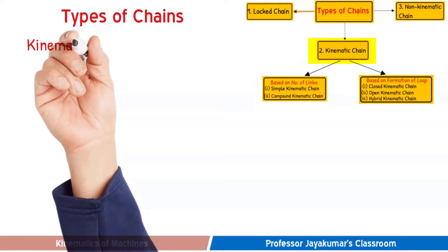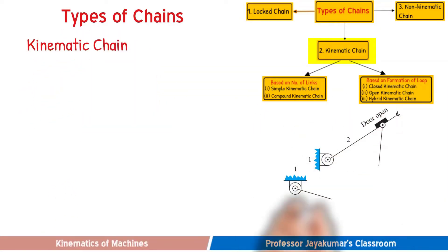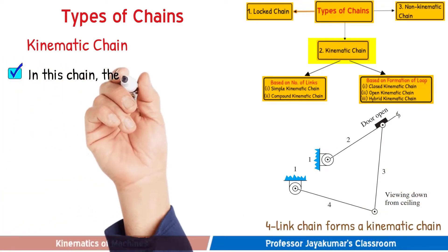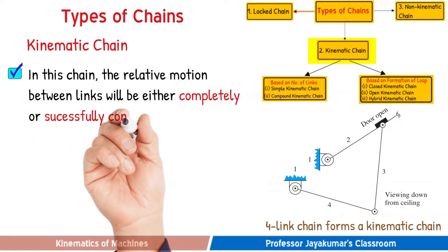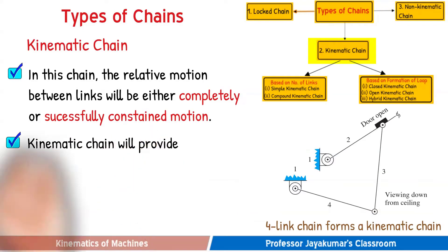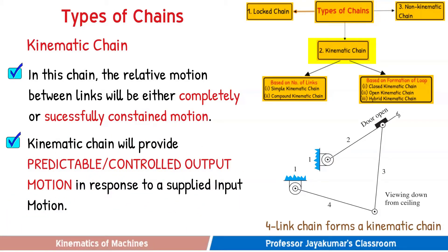Finally, we have the kinematic chain. The four-link chain shown forms a kinematic chain. The relative motion between these links will be either completely or successfully constrained motion. These kinematic chains will provide a predictable output motion. Hence, this is the most important type of chain which can be used for developing and designing a mechanism and machine.